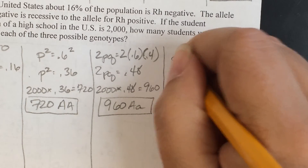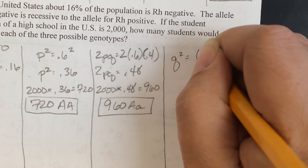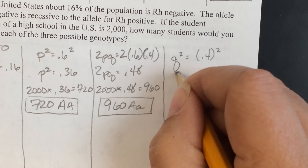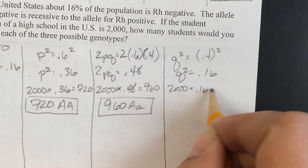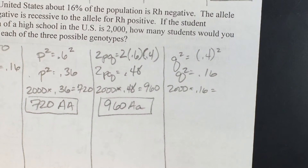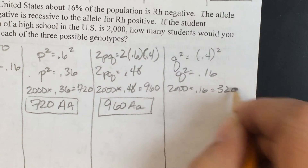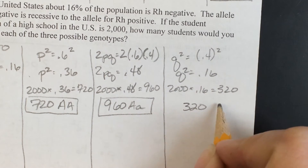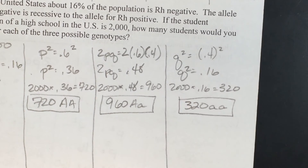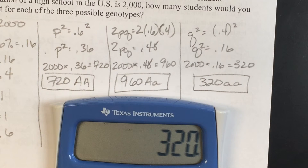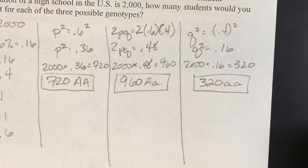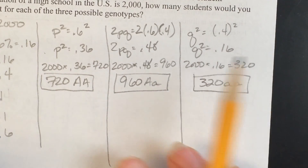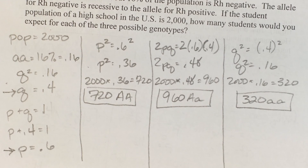Finally, our q squared value is 0.4 squared, which equals 0.16. So 2,000 times 0.16 gives us 320 individuals expected to be homozygous recessive. To double-check: 320 plus 960 plus 720 adds up to 2,000. The catch on this one was that you weren't working with a population of 1,000 — it was 2,000, and that's how they were trying to throw you off. Check the next video for the next set.